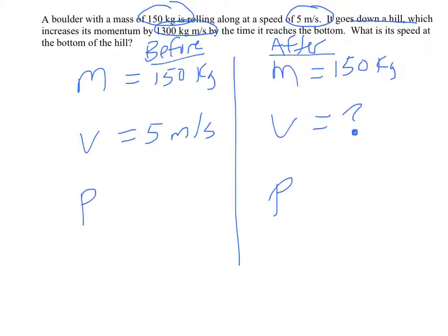So here's what we're going to do, is if you know mass and velocity, we saw in the last thing that you can find the momentum. So the momentum before is 150 times 5, or 750 kilogram meter per second.